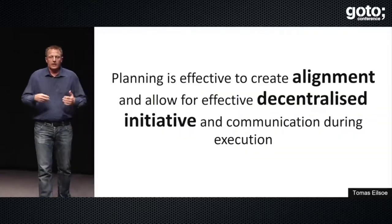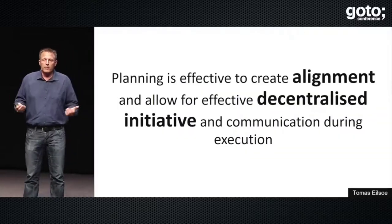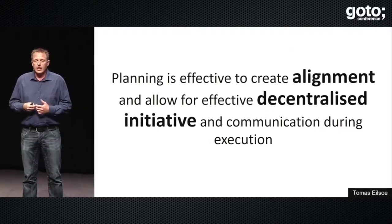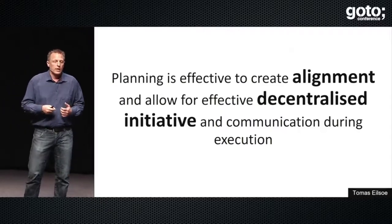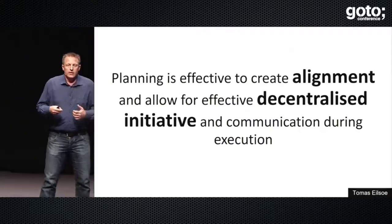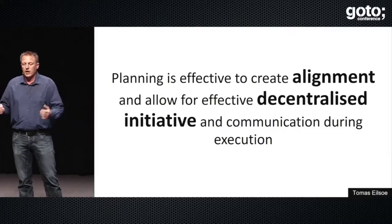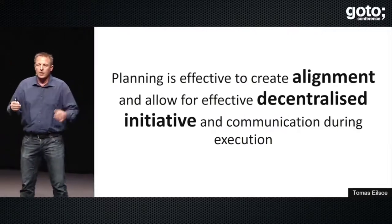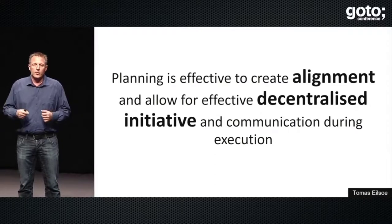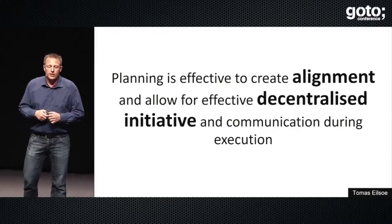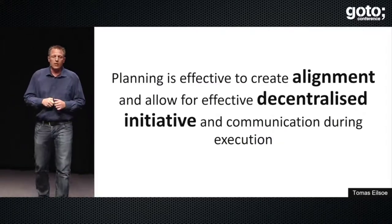His idea is that it's really not the plan which is the output of the planning. The output of planning is alignment - a shared mental model about what can be achieved, where are the risks and what we need to look out for when we are executing. It's really a tool, this three month planning session called PI planning, to get a common understanding and decentralize execution and make communication easier while we execute.